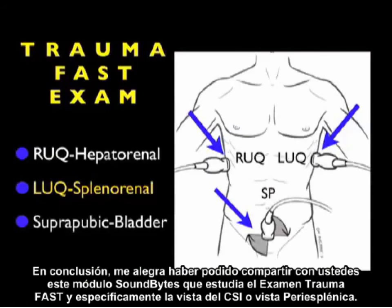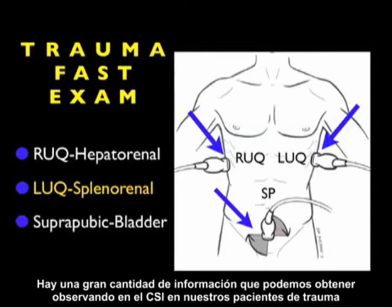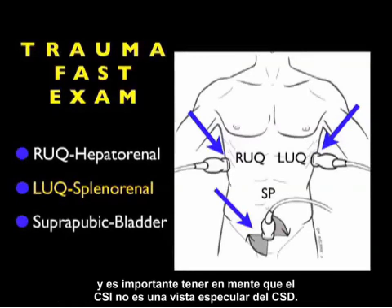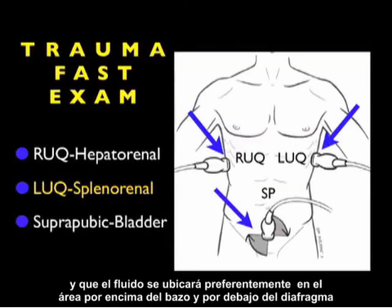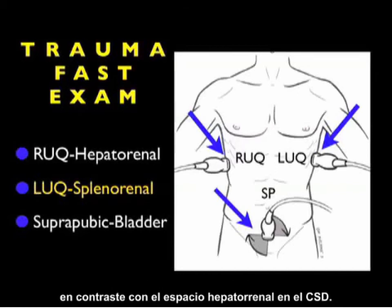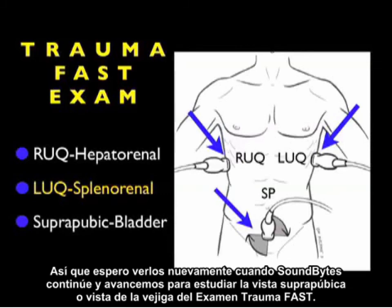In conclusion, this Soundbytes module has covered the trauma fast exam — specifically the left upper quadrant or perisplenic view. There's a great deal of information we can gain by looking into the left upper quadrant in our trauma patients. It's important to realize that the left upper quadrant is not a mirror view of the right upper quadrant, and that fluid will preferentially layer out above the spleen and below the diaphragm, in contrast to the hepatorenal space on the right upper quadrant. I hope to see you back as Soundbytes continues with the suprapubic or bladder view of the trauma fast exam.